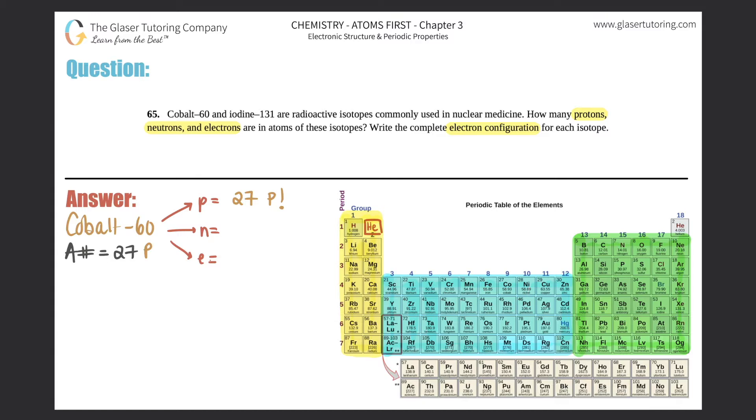Now, they tell us that it's cobalt-60. So what do you think this 60 represents? This 60 is the mass number. And remember, the mass number is always equal to protons plus neutrons. So if I have 60 as my mass number, and I know now that I have 27 protons, I can